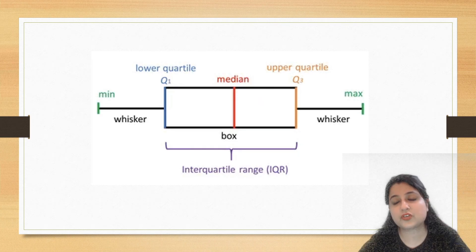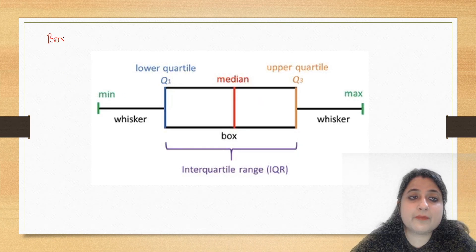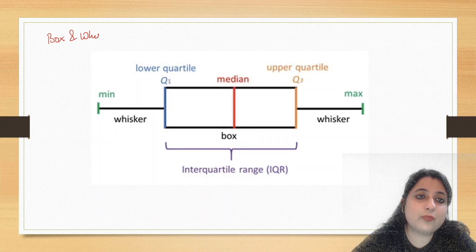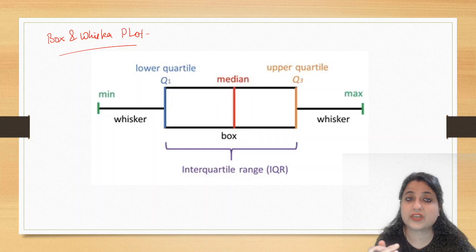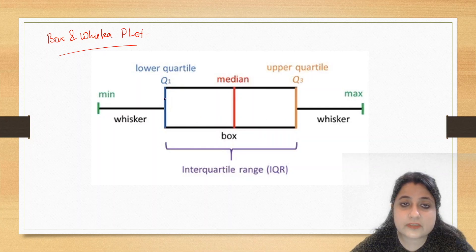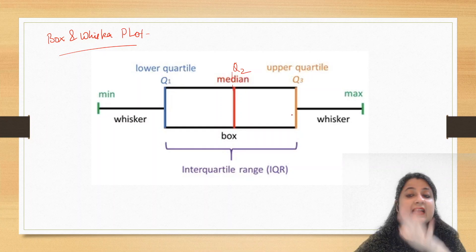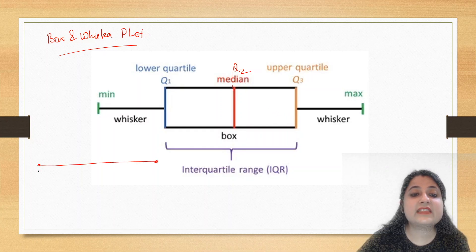What is this? This is very important. This is a box and whisker plot. What does this do? This is used to represent quartiles and also comments on the type of distribution: is it normal, is it skewed? This is Q1, the middle one we all know is Q2, and Q3.